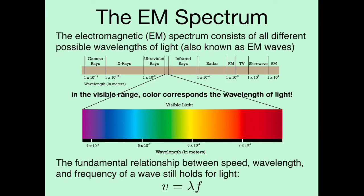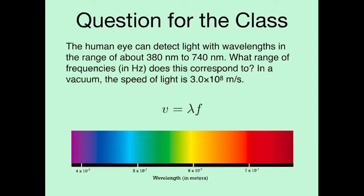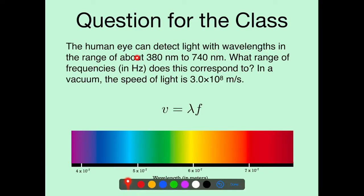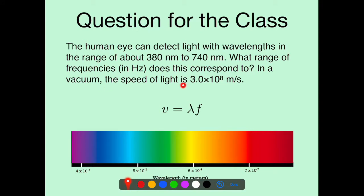The fundamental relationship between speed, wavelength, and frequency still holds for light: v = λf. So let's do a calculation using that idea. The human eye can detect light with wavelengths in the range of about 380 nanometers to 740 nanometers. The question is: what range of frequencies in hertz does this correspond to? We'll use the fact that in a vacuum, the speed of light is 3 × 10⁸ meters per second. Pause the video, try to work this out, and then come back when you think you have your answer.